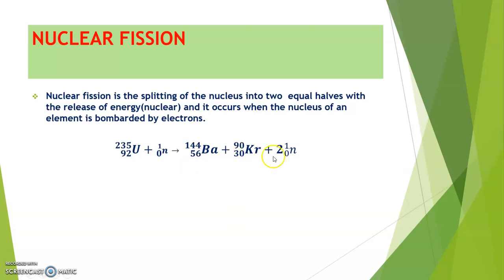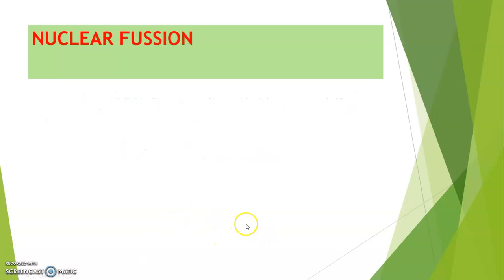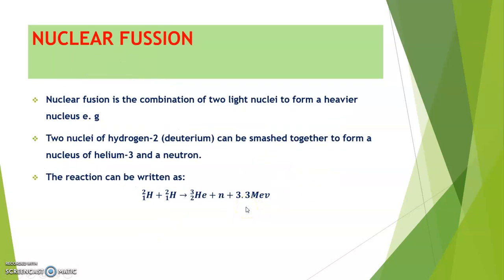What then is nuclear fusion? Nuclear fusion is simply the combination of two light nuclei to form a heavier nucleus. For example, two nuclei of hydrogen-2 can be smashed together to form the nucleus of helium-3 and a neutron.